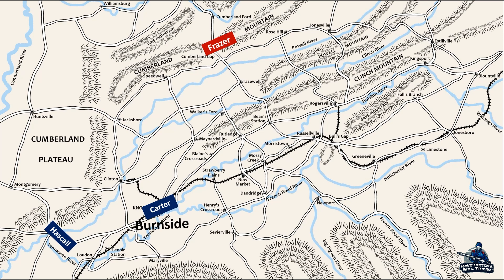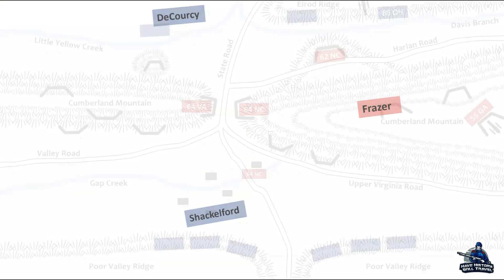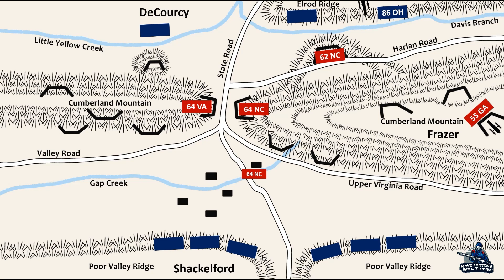To completely surround the Gap, Burnside sent Brigadier General James Shackelford northeast toward the Gap. Additionally, Burnside dispatched his troops throughout the region to push back any Confederate forces. By September 5, both Shackelford and de Corsi were putting pressure on the Gap by sending out skirmishers to harass Frazier's pickets. By September 8, both brigades converged on the Gap. Frazier got conflicting reports from his superiors about whether to abandon his position or to stay, but before he could leave, the two Union brigades surrounded his position.